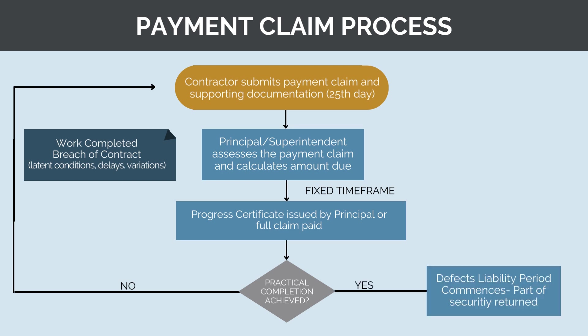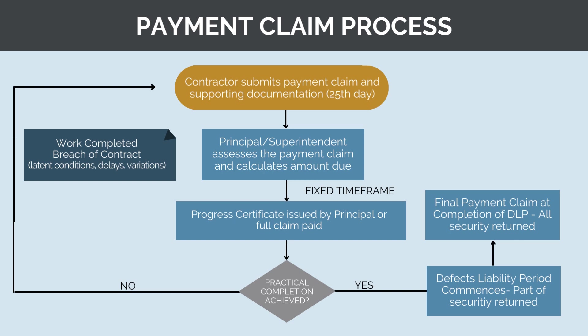When practical completion does occur, the defect liability period will commence and part of the contractor's security will be returned. At the end of the defects liability period, all security will be returned and a final payment claim can be made to cover any outstanding works or variations not yet claimed. After this has been reviewed and approved, the contract will be closed out and no additional payment claims can be made.